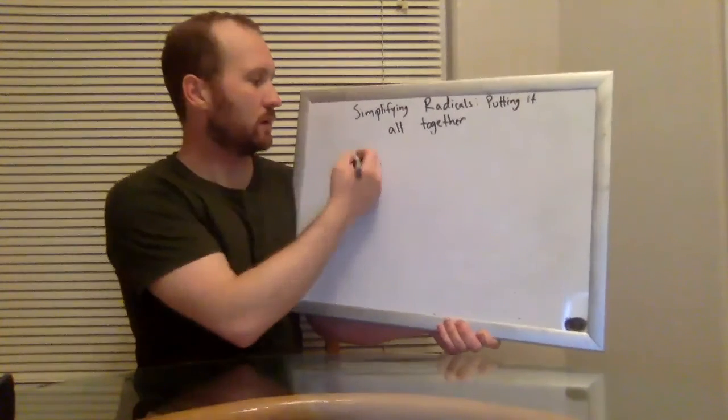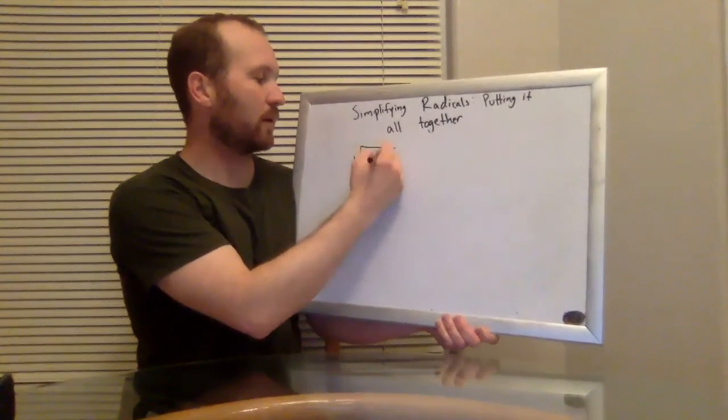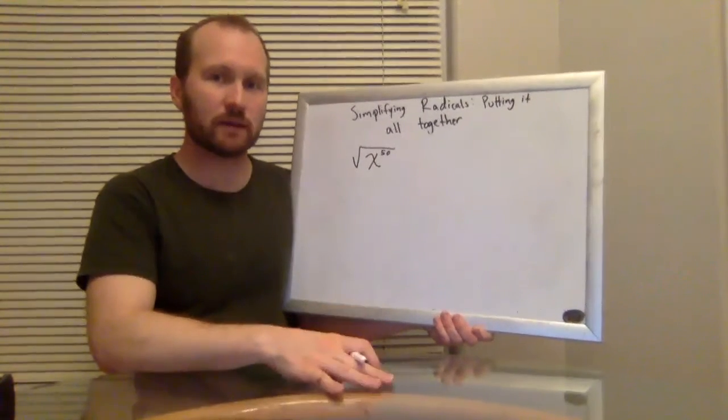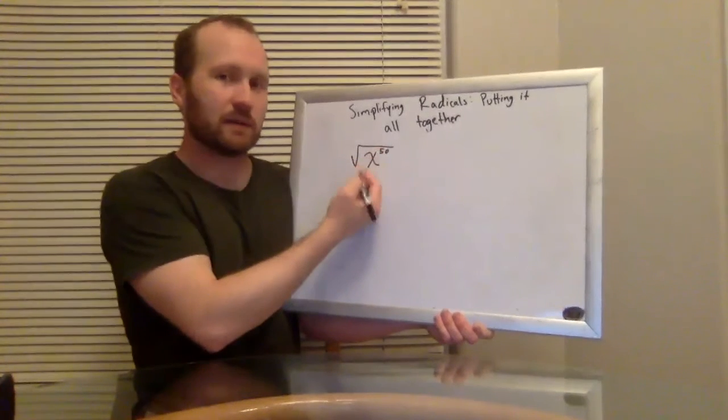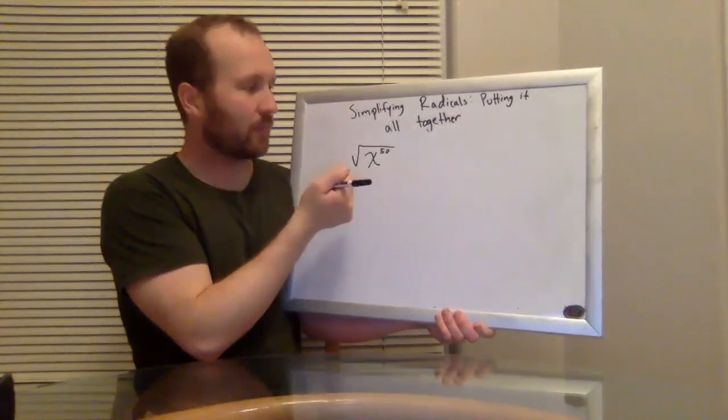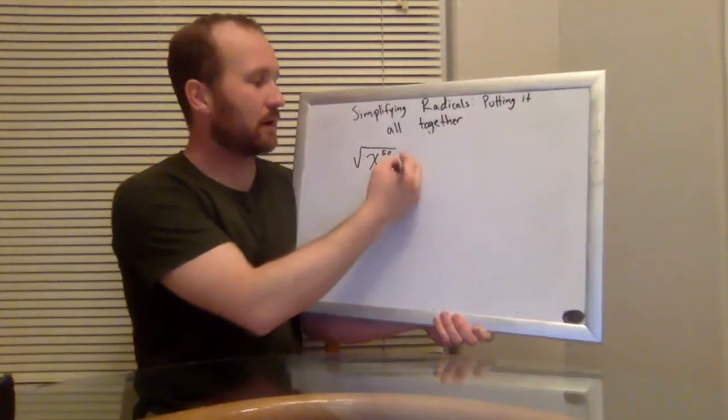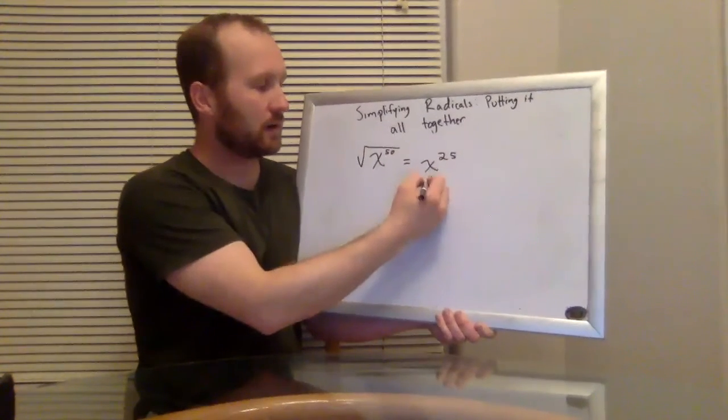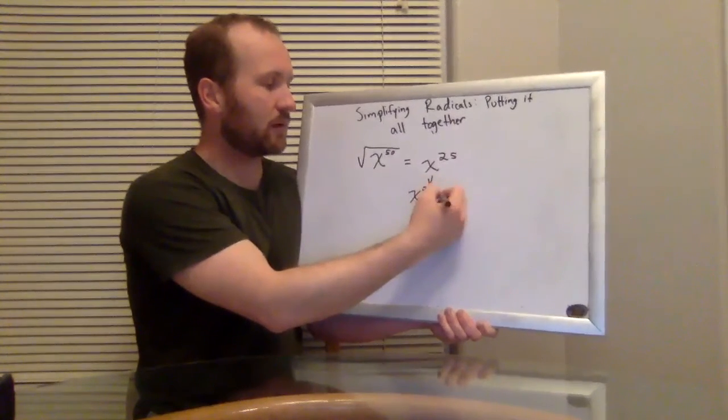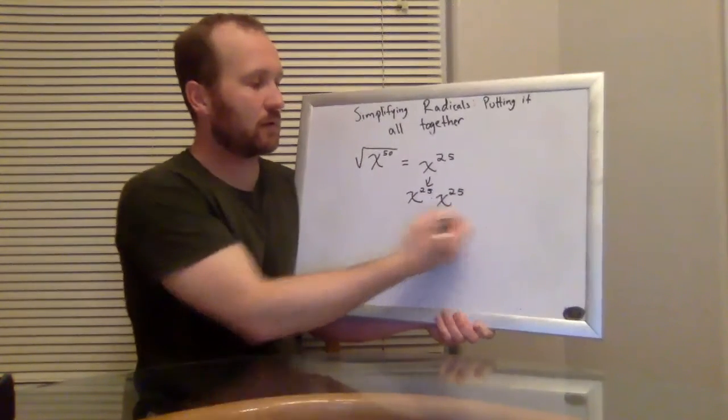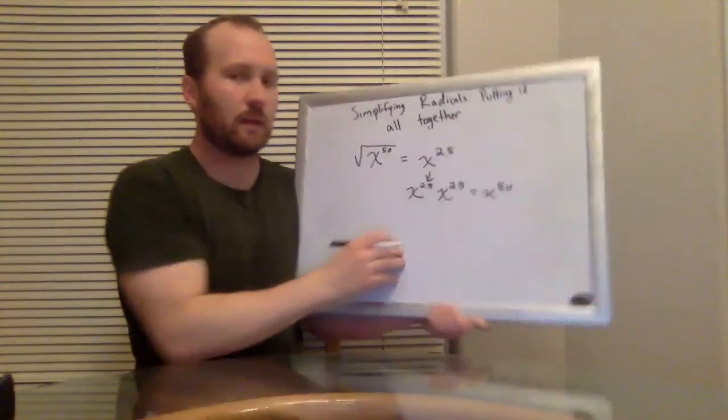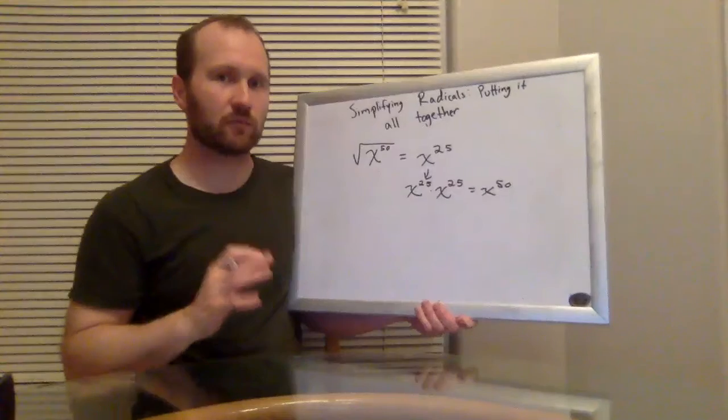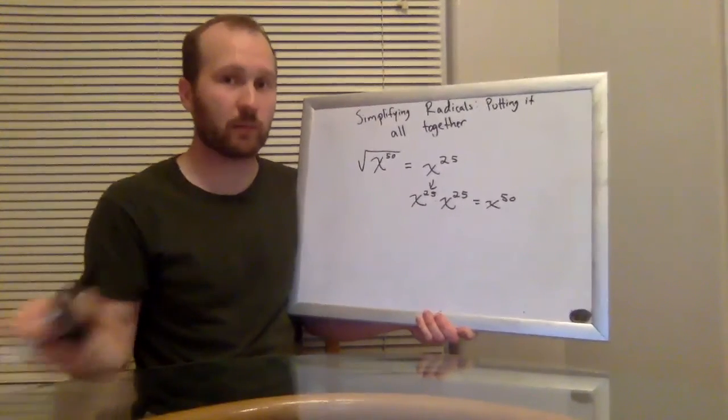Okay, so that's how it works with numbers. With the variables, we're basically taking the 1/2 power. So x to the 50th. I'm trying to think of what times itself would equal x to the 50th. Well, that would just be whatever half of 50 is, right? So that would just be x to the 25th because x to the 25th times x to the 25th would be x to the 50th. Now, if you don't remember this property of exponents, you can really quickly remind yourself of it by doing a much smaller example, taking something like x to the 6th.